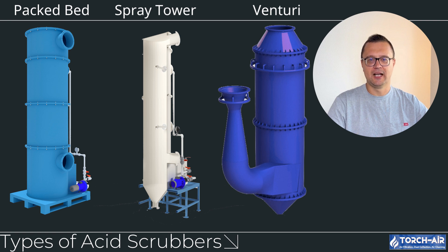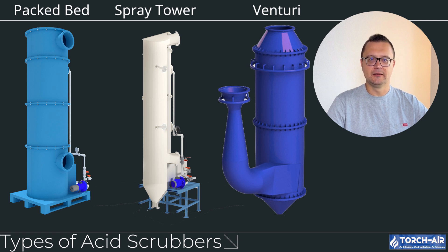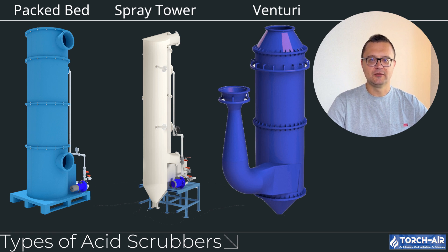Types of acid scrubbers — let's take a look at the different types commonly used, depending on the specific requirements of your industry. Packed bed acid scrubbers are one of the most common types. In these systems, the gas passes through a tower filled with packing material that increases the surface area for contact between the gas and the scrubbing liquid, making them highly efficient at removing acidic gases. They offer high removal efficiency, especially for soluble acidic gases like hydrochloric acid (HCl), and are best for industries like chemical processing, metal finishing, and incineration facilities where HCl or HF need to be scrubbed.